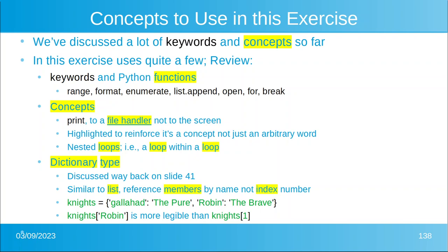Let's look at concepts. We're going to print, but we're going to print to a file handler, not to the screen. Last exercise we read from a file; now we're going to write to a file. Anything that's a concept is going to be highlighted in yellow. Nested loops — that's a loop within a loop. And dictionary type, which we discussed way back on slide 41 — it's similar to a list, but you reference the members by a name and not by an index number. So for knights we have Galahad and Robin, as opposed to knight sub zero and knight sub one — we have knight sub Robin, which is more legible.